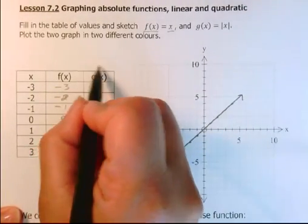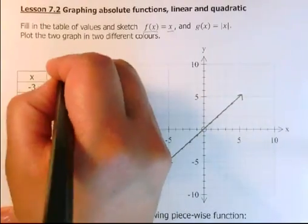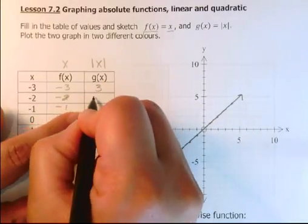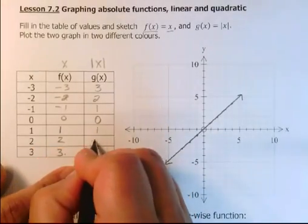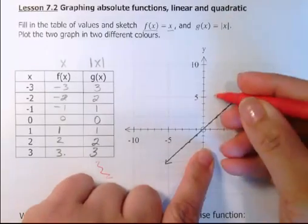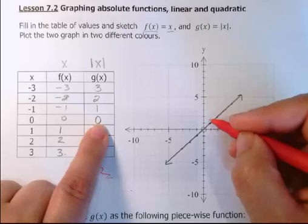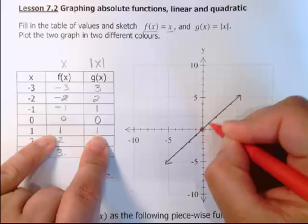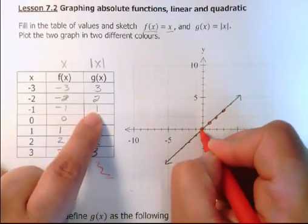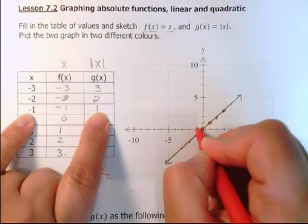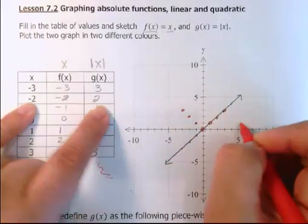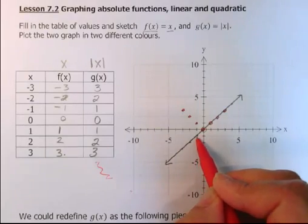Now for g(x), this is the absolute value of x. Where f(x) was just x, the absolute value makes any value positive. So -3 becomes 3, -2 becomes 2, -1 becomes 1, and 0, 1, 2, 3 stay positive. I'll plot g(x) in red. Starting from the center: (0,0), then (1,1), (2,2), (3,3). Over here, (-1, 1), (-2, 2), (-3, 3).